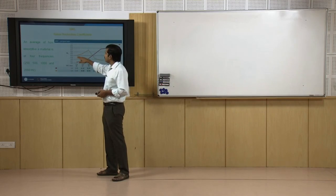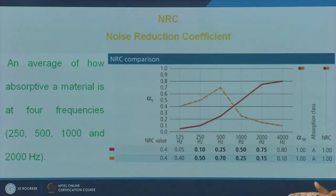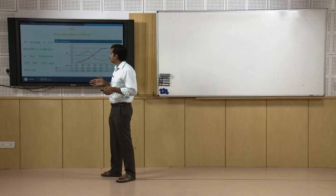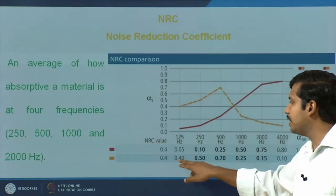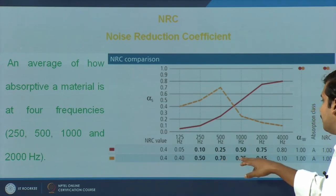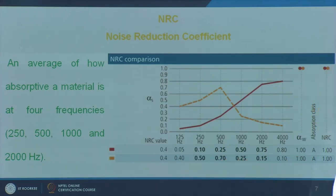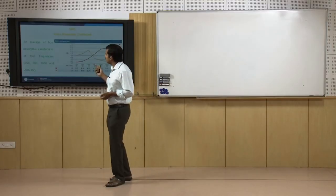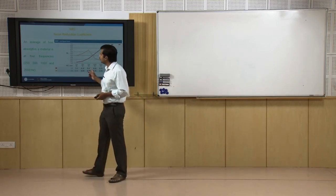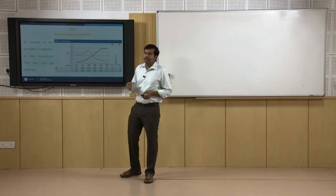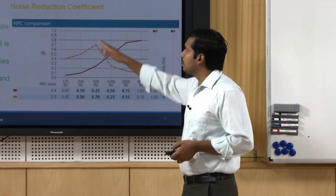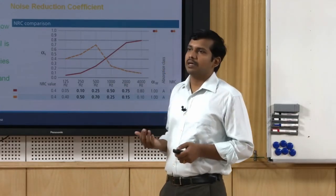Take another material Y — say it could be glass wool behind a particular panel or a fabric, around 50 to 75 mm thick. At 125 Hz it has slightly better absorption, around 0.4 to 0.5. Mid frequency is close to 0.5, but after mid frequency it has very low absorption. Commonly when you buy a material, you have a value called NRC — Noise Reduction Coefficient — which is nothing but an average absorption coefficient of four different frequencies: 250, 500, 1000, and 2000 Hz.